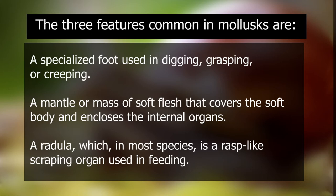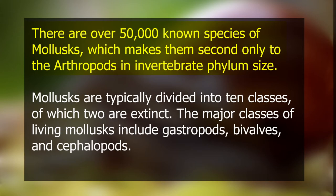Let's go over it again. The three features common in Mollusks are: one, a specialized foot used in digging, grasping, or creeping; two, a mantle or mass of soft flesh that covers the body and encloses the internal organs; and three, a radula, which in most species is a rasp-like scraping organ used in feeding.